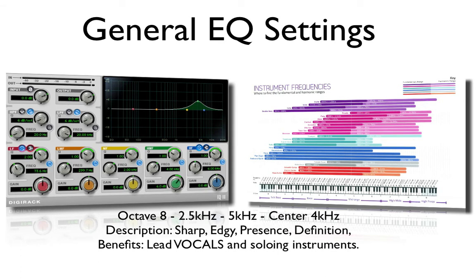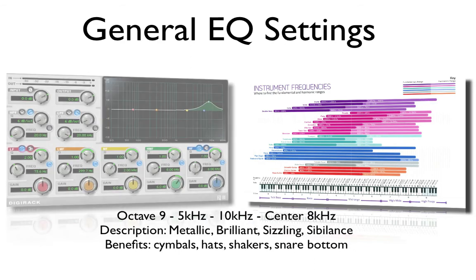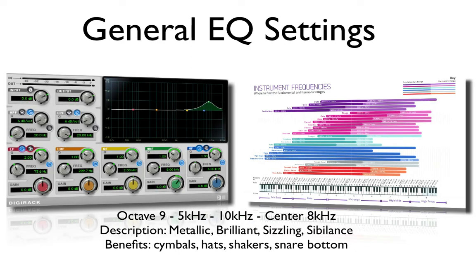Octave 8: 2.5 kilohertz to 5 kilohertz with a center point of 4 kilohertz. This is going to sound a little sharp and edgy, bringing presence and definition to your sound. This is great for lead vocals or soloing instruments. Octave 9: 5 kilohertz to 10 kilohertz with a center point of 8 kilohertz. This makes your sound a little more metallic, brilliant, and also adds a little sibilance to vocals. Instruments that benefit from this include cymbals, hi-hats, shakers, and snare bottoms.